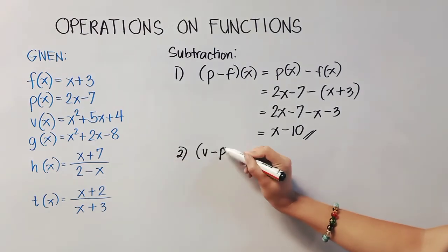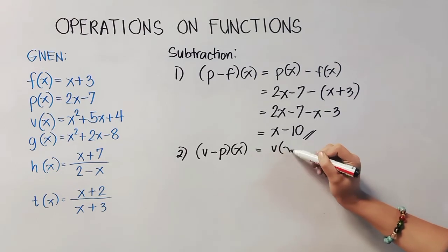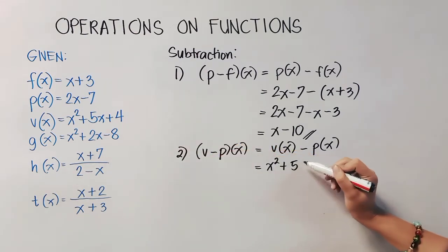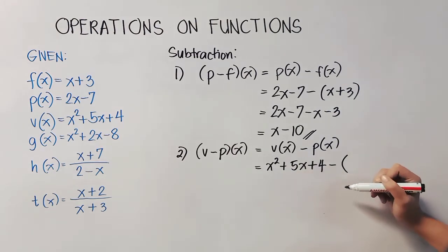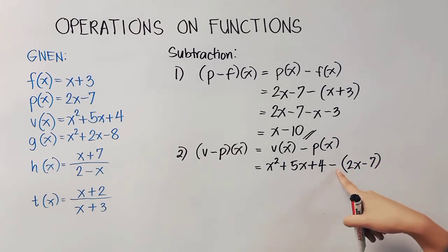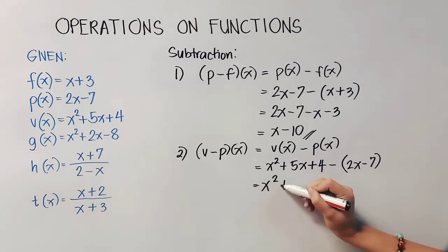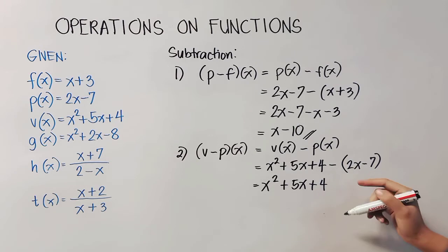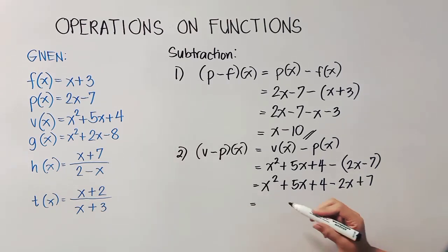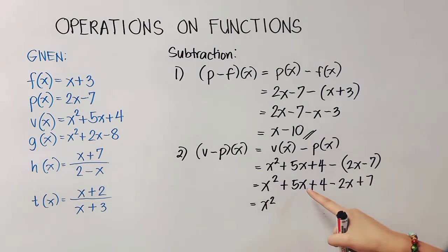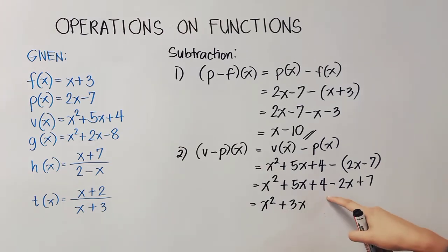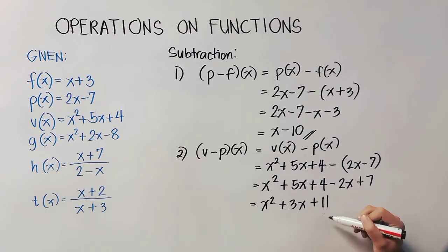Number 2 is written as V(x) − P(x). V(x) = x² + 5x + 4, minus — enclose in parentheses — (2x − 7). We distribute the negative: negative times positive = −2x, negative times negative = +7. Looking for like terms: x² stands alone, copy it. 5x − 2x = 3x. 4 + 7 = 11. Final answer: x² + 3x + 11.